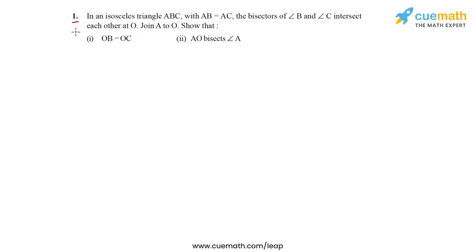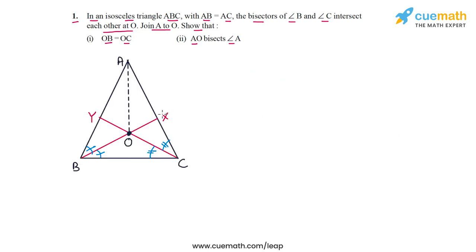In question 1 of this exercise, the problem statement says: in an isosceles triangle ABC with AB equal to AC, the bisectors of angle B and angle C intersect each other at O. Join A to O. The first step to solve this problem should be to draw a figure that represents the information given in the problem statement. Here is a figure drawn for you.